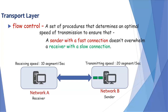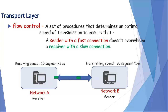If there is no flow control, what will happen when data is transferred from network B to network A? Half of the data segments are lost because of the slow receiving speed of network A.